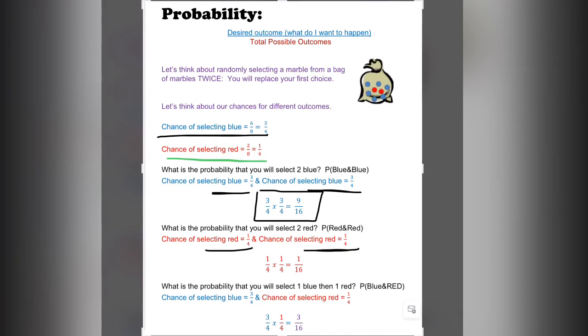We do the same thing for red. We said it was a 1 in 4 chance. The first time, 1 in 4. The second time, 1 in 4. Multiply those together: 1/4 times 1/4 equals 1 out of 16.